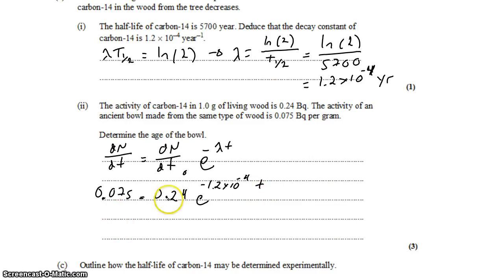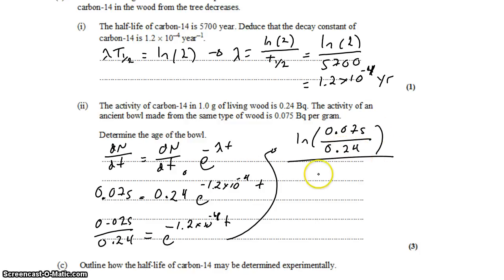So we'll start by dividing by 0.24. 0.075 divided by 0.24. Then we have to get rid of this exponent. So we'll take the natural log of both sides. And then we'll divide by negative 1.2 times 10 to the negative 4. So that gives us the natural log of 0.075 divided by 0.24, all of that divided by negative 1.2 times 10 to the negative 4. And that gives us t.